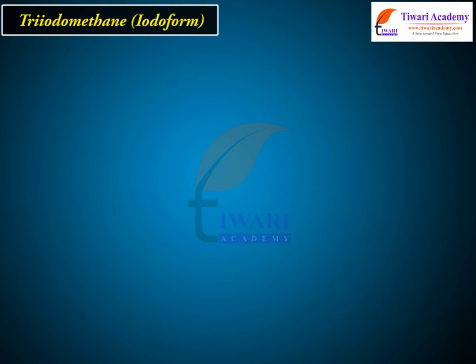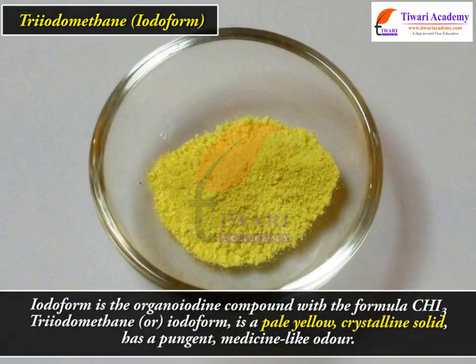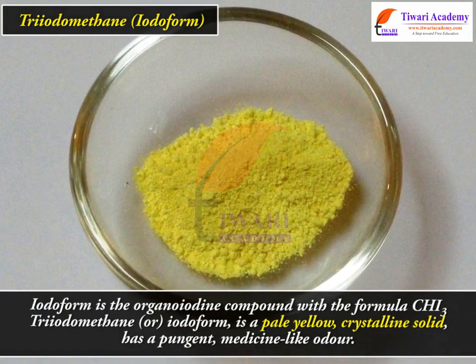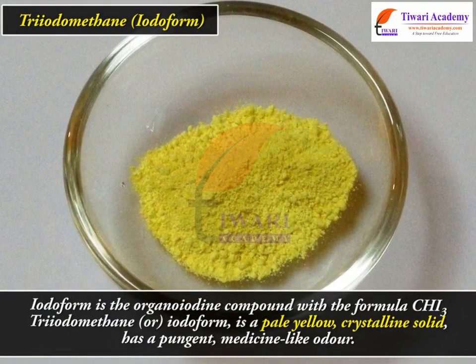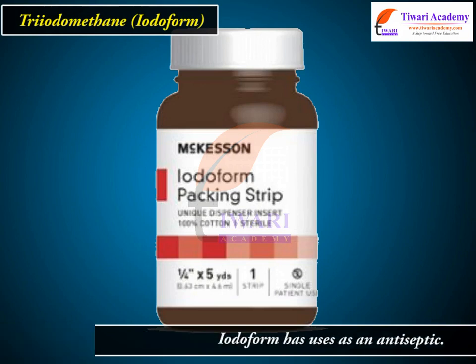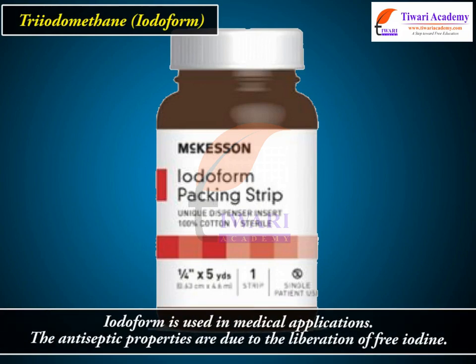Triiodomethane, or iodoform (CHI3), is an organoiodine compound. It is a pale yellow crystalline solid with a pungent, medicine-like odour. Iodoform has uses as an antiseptic in medical applications; its antiseptic properties are due to the liberation of free iodine.